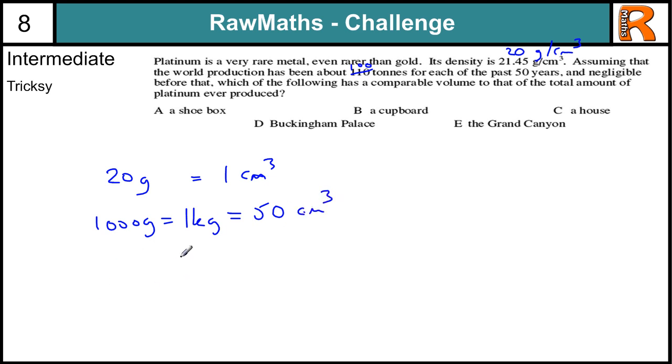So 1 kg is about 50 cm³, so 1 ton, metric ton, is 1000 kg, so it's going to be 1000 times 50, so 50,000 cm³. And we want 100, well we want 110, but we'll just use 100 tons, it's going to be 100 times 50,000, which is 5,000,000 cm³.